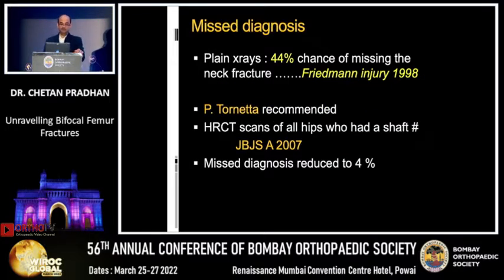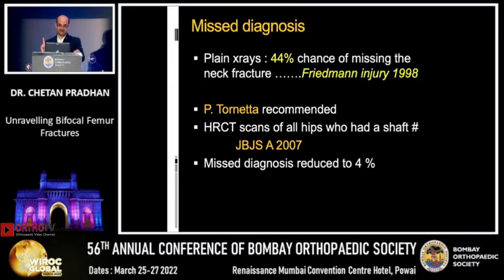So from a 44% missing rate described by Friedman, Paul Tornetta reduced it to 4% by doing an HR CT scan — that is, a high resolution CT scan of the hip in all suspected bifocal fractures.